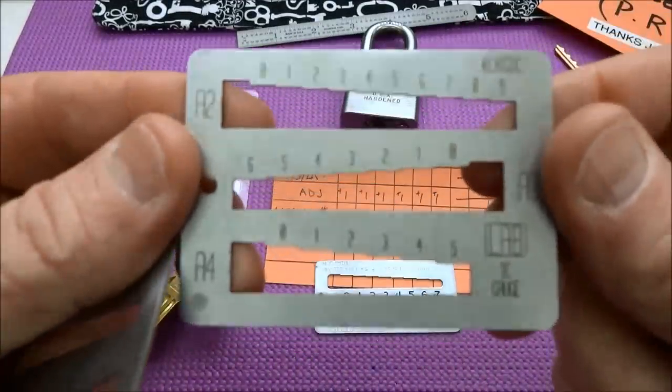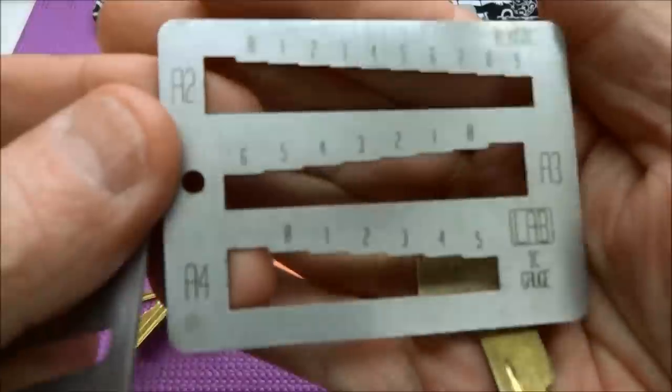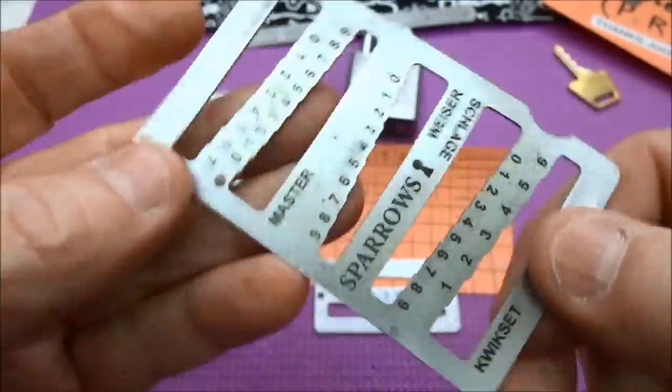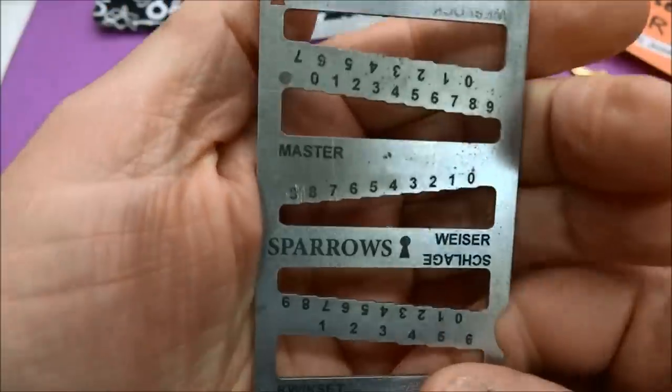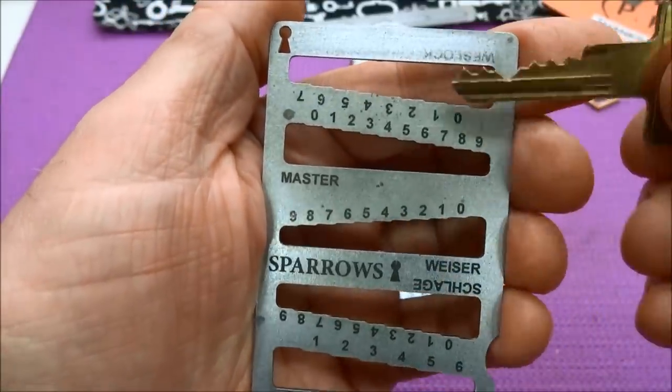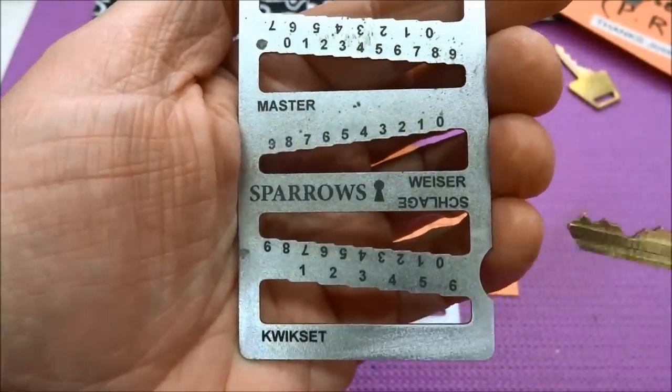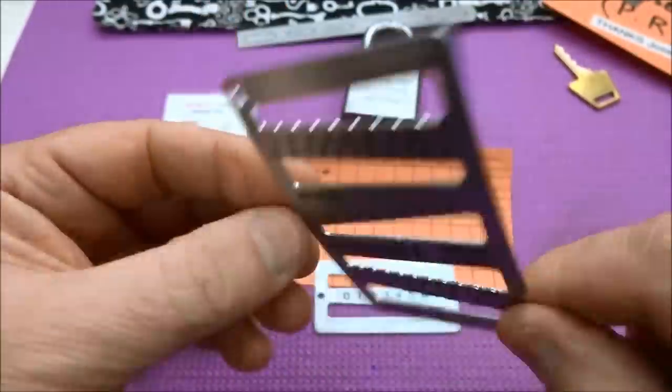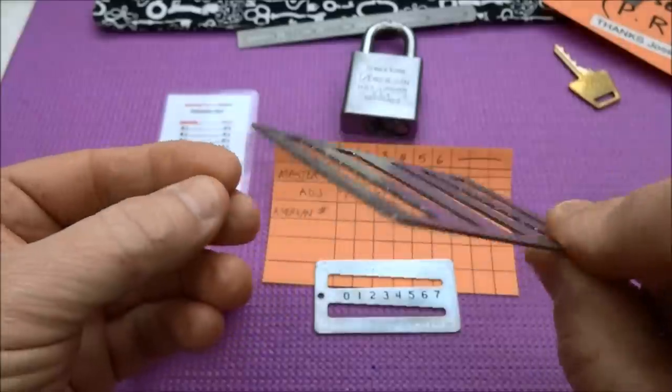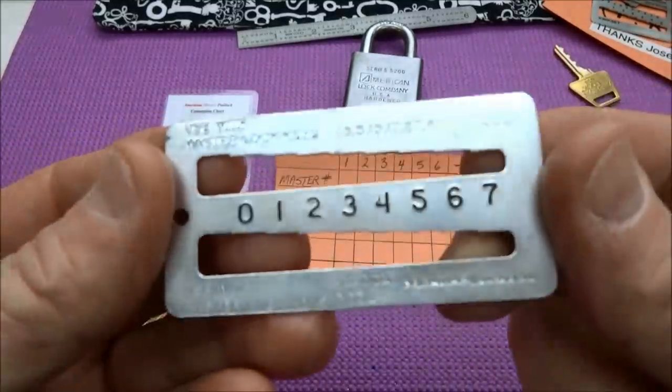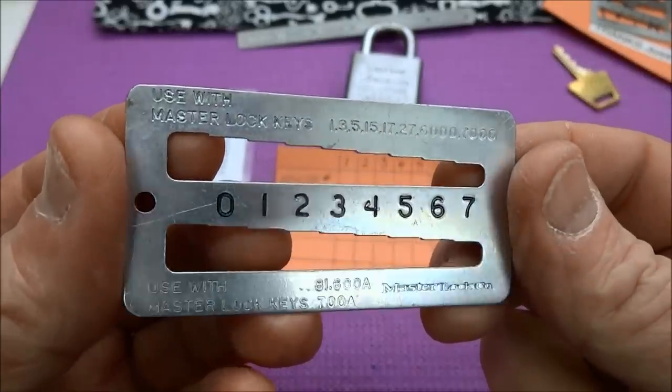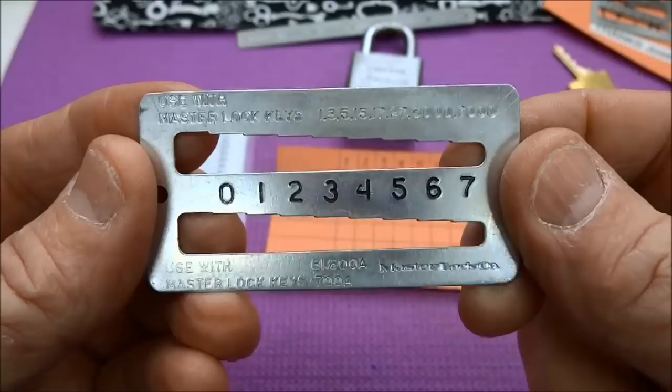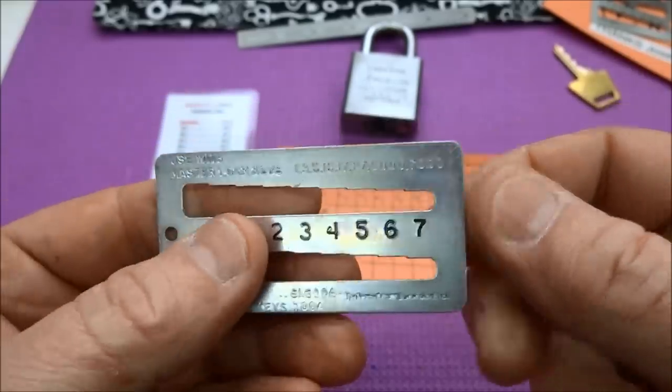There's a variety of them. This one is Master. I have a couple more here. This one is for Best lock. If you bought one from Sparrows, you might find something like this - it's multi-purpose with everything from Kwikset to Schlage to Master, all on one gauge.